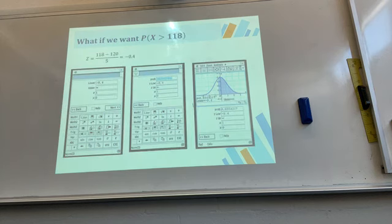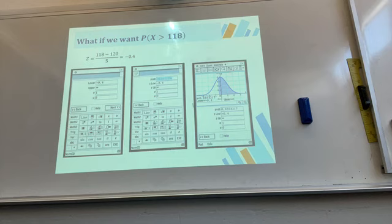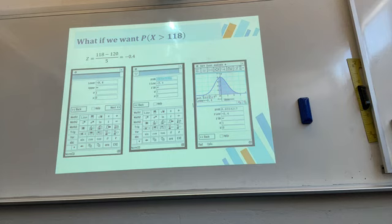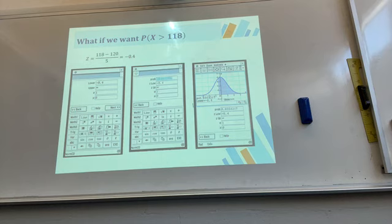Next example: P(X > 118). Because it's greater than, the region goes from 118 to infinity. You can use the z-score or the actual values. Enter the values, then draw the graph to check — greater than means the shading is to the right of the value, less than is to the left. Always check your shading.